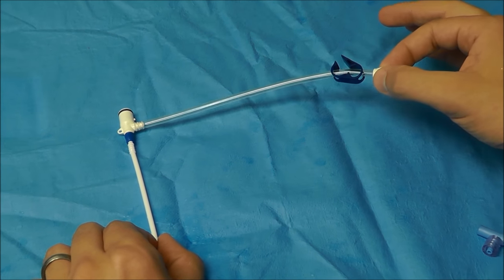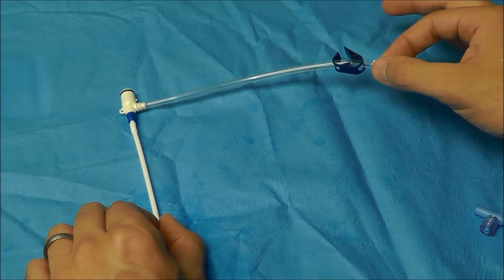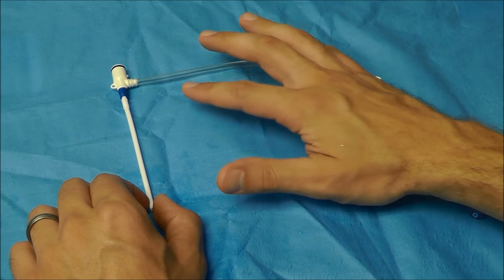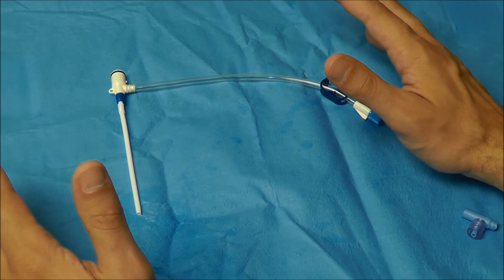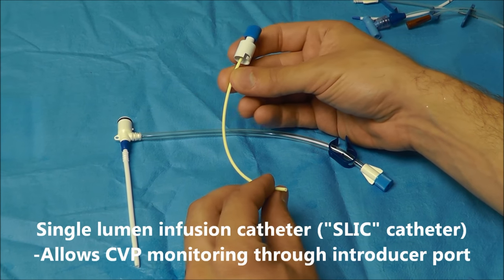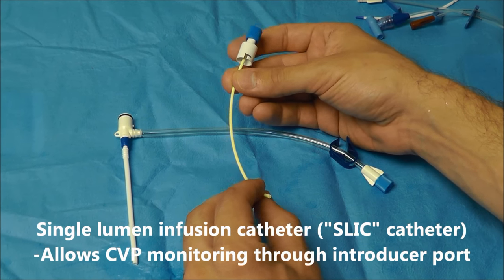By itself it has no way to record CVP, but never fear, there are some things that you can do to overcome your lack of ports. Number one is you can use what's called a slick catheter or a single lumen infusion catheter.